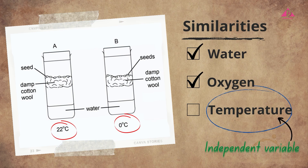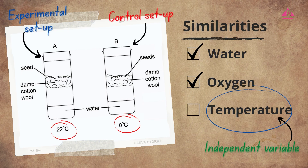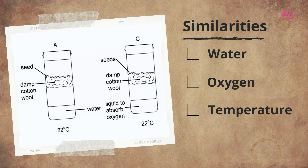So we now know that temperature is the independent variable. Usually, the independent variable is present in the experimental setup, while it is absent in the control setup. Since setup B lacks a warm temperature, we can deduce that setup B is the control setup, while setup A is the experimental setup, when studying the effect of temperature on seed germination.